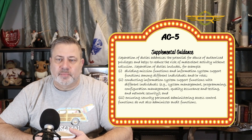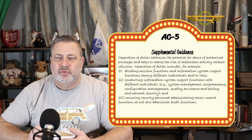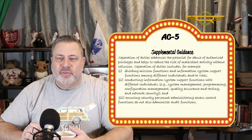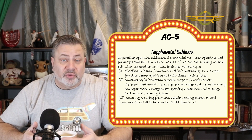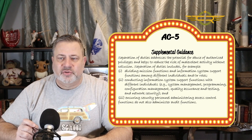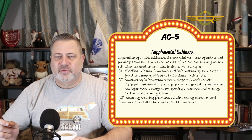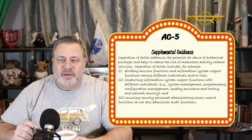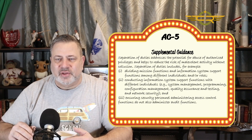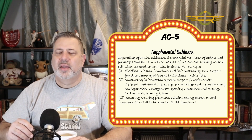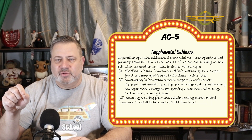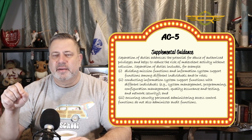Supplemental guidance: separation of duty addresses the potential for abuse of authorized privileges and helps reduce the risk of malevolent activity without collusion — more than one person working together. Separation of duty includes, for example, dividing mission functions and information system support functions among different individuals and roles, conducting information system support functions with different individuals, and ensuring security personnel administering access control functions do not also administer audit functions.